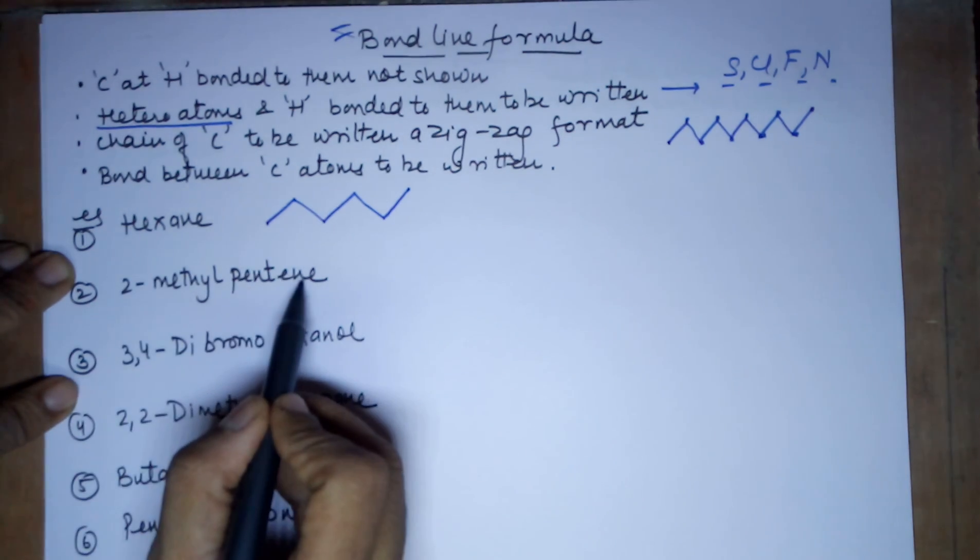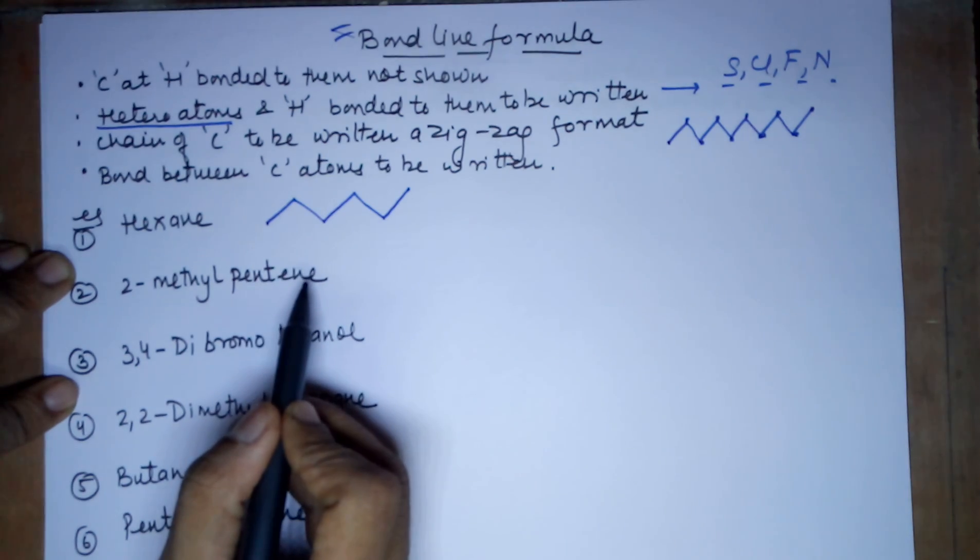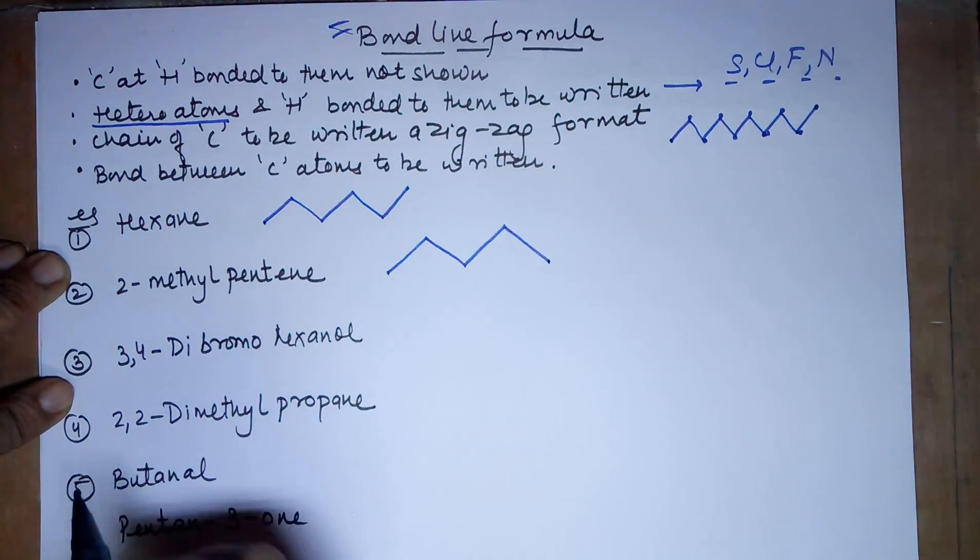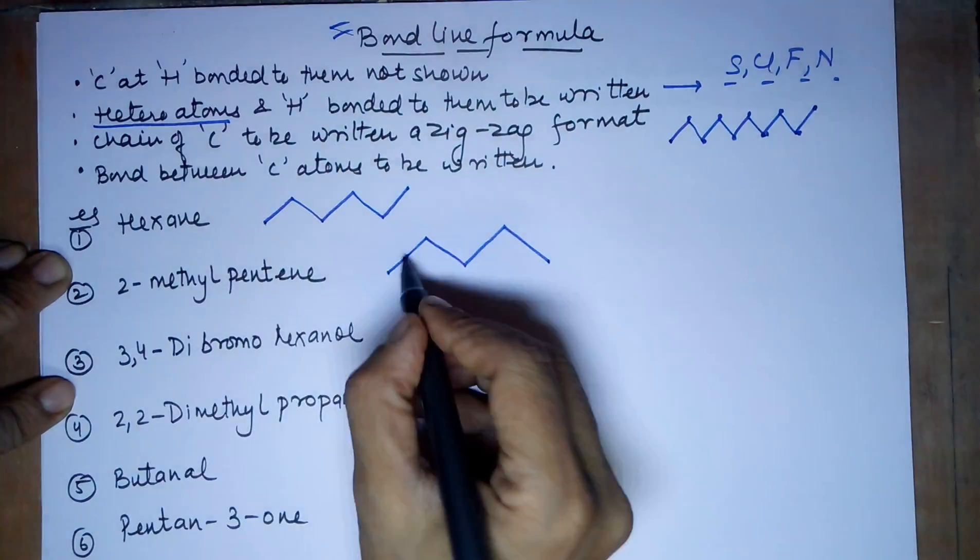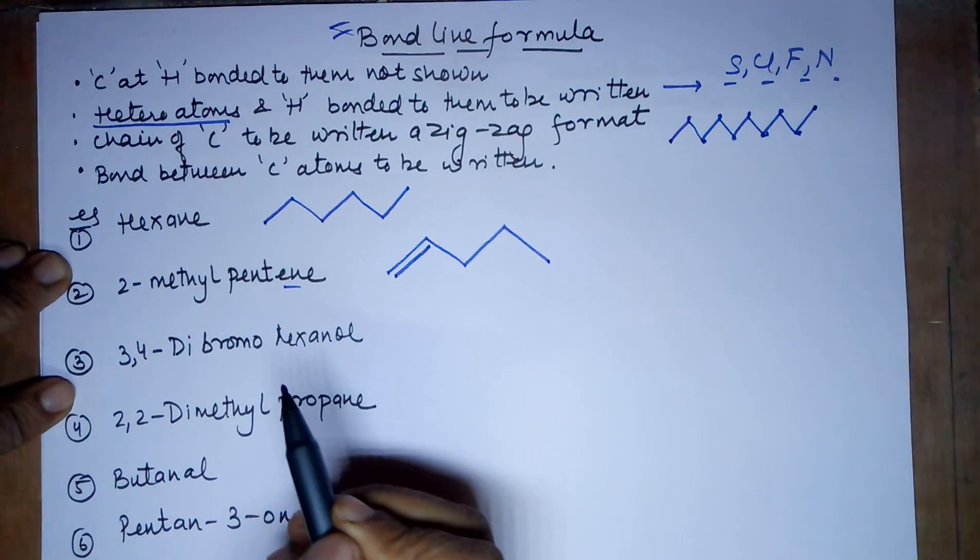2-methyl pent-ene. 5 carbons with a double bond. The positioning of the double bond is not given, which means it is at the first position. 1 carbon, 2 carbon, 3 carbon, 4 carbon and 5 carbon. 5 carbons done. The first carbon has a double bond. That is why your ene is done.